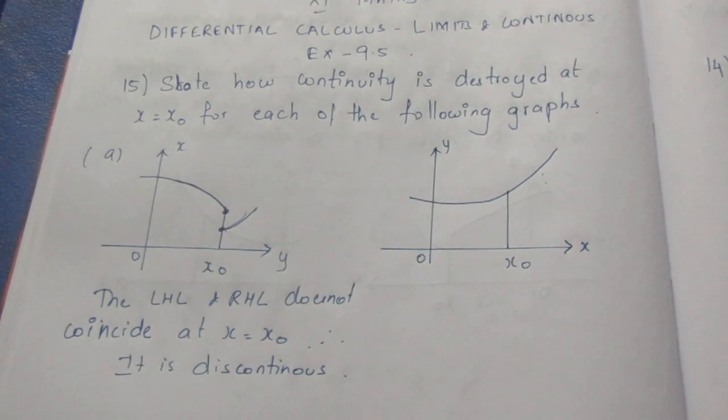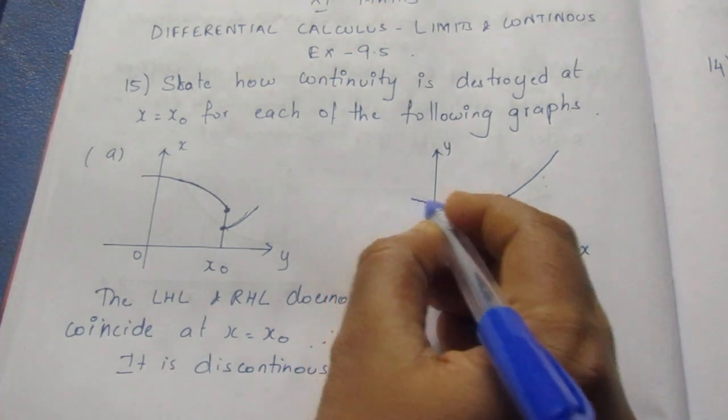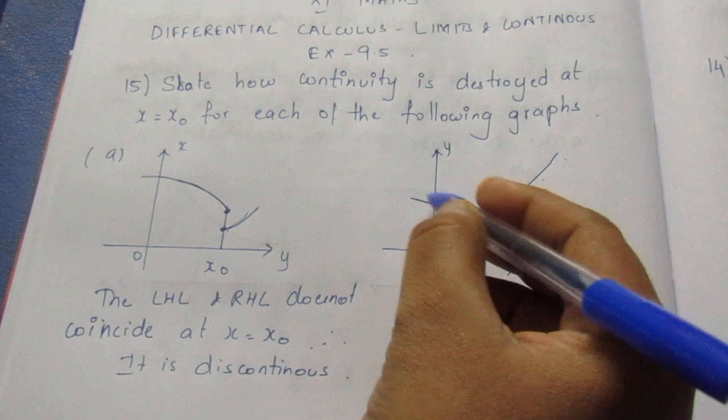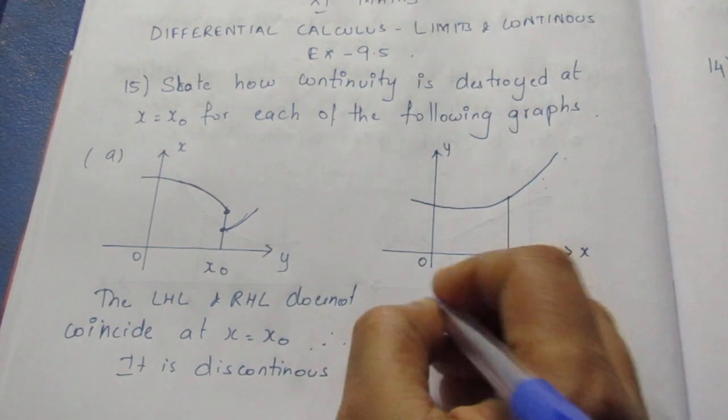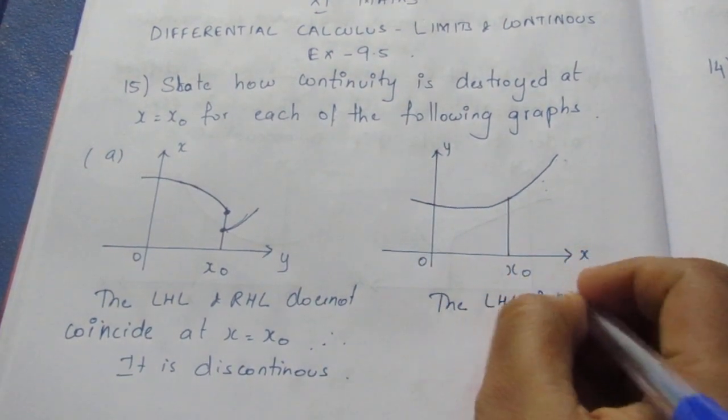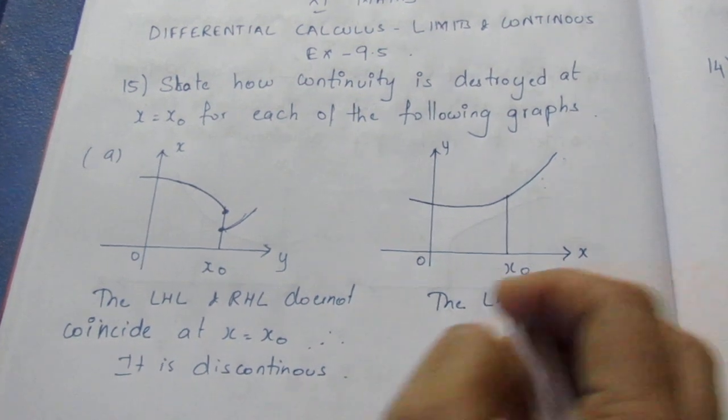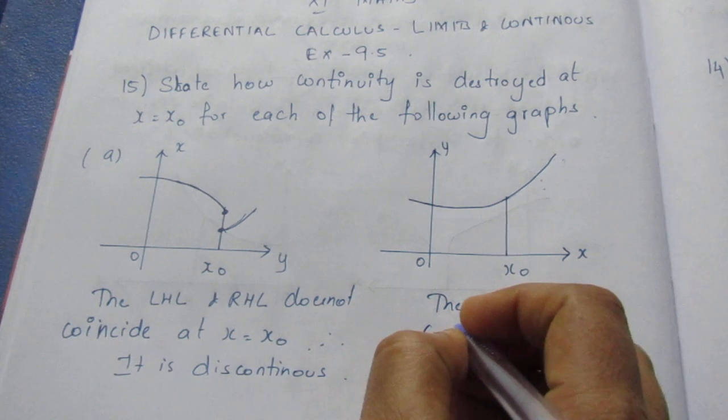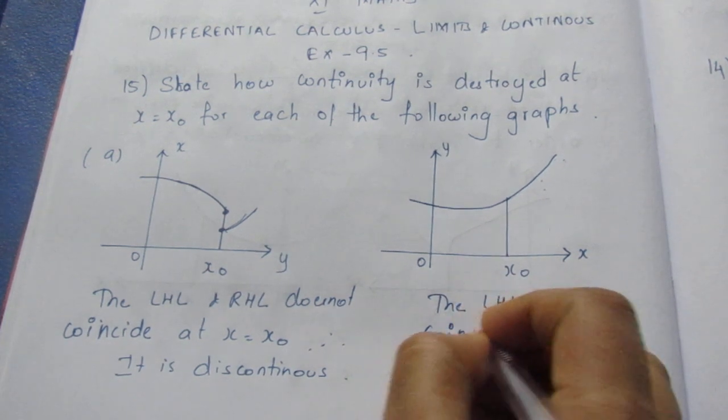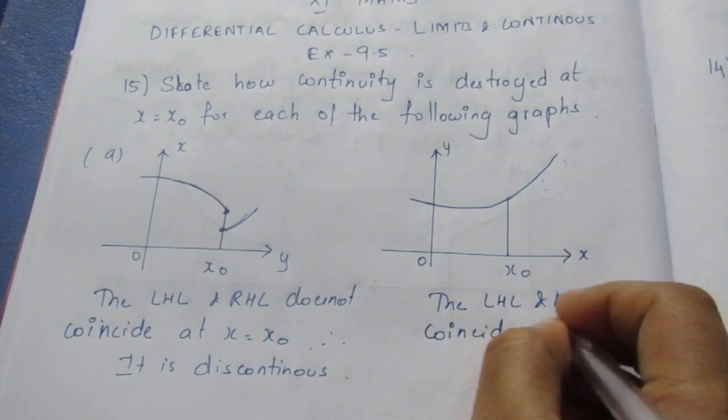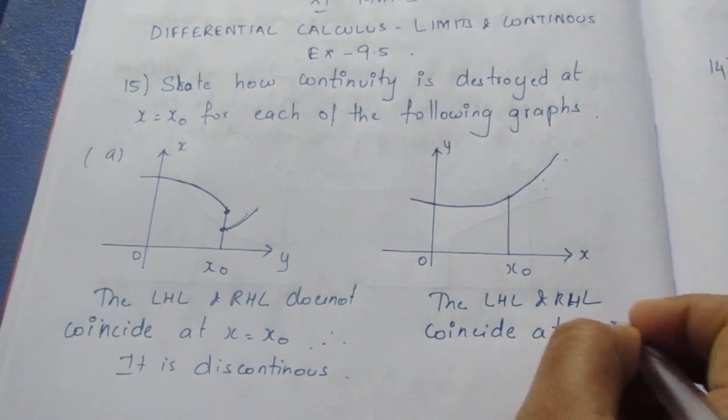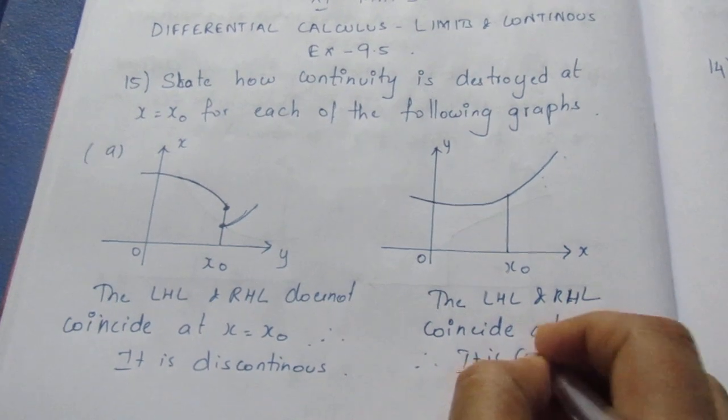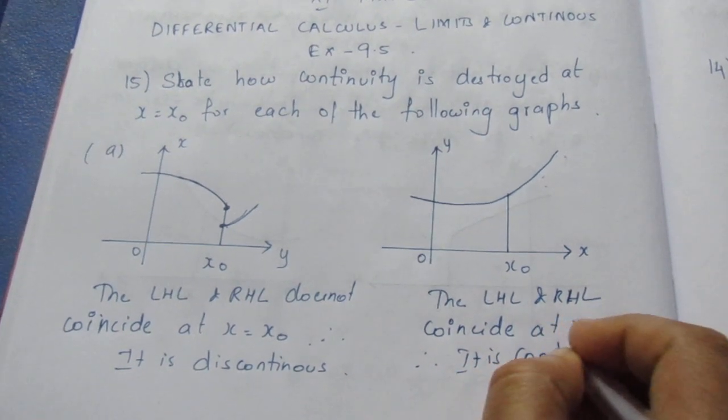Let's see the first sum. Graph will go and right hand side will go. Left hand side is the right hand side. Let's see if it continues. The LHL and RHL coincide at x equals x0. Therefore, it is continuous, or the graph is continuous.